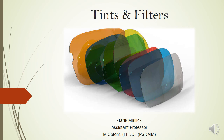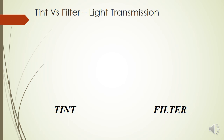Before we start, we need to understand the difference between a tint and a filter. A tint is basically a color which is given to a particular lens, whereas a filter filters out a particular wavelength or spectrum of light which passes through it.